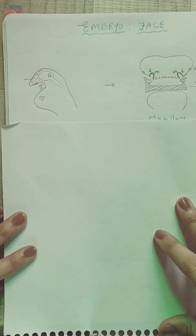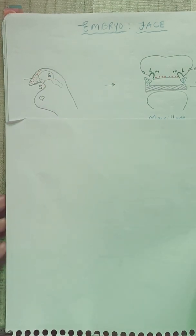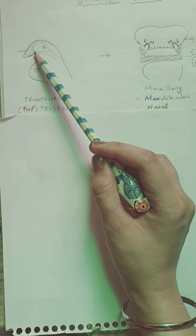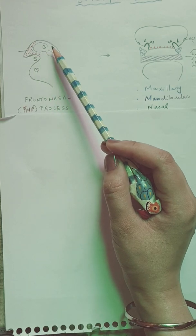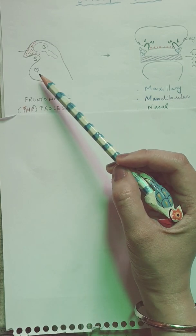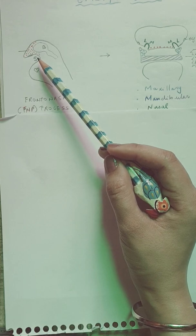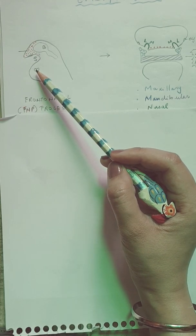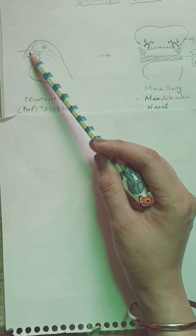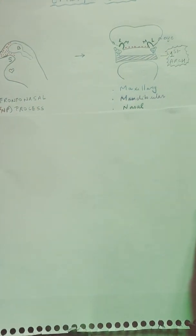This is the basic part of the embryo where the frontonasal process, which is one of those three processes important in development, develops from this part. This is actually the mesenchyme which is overlying the forebrain, and this is a part of the pericardium. The stomatodium, which forms the primitive mouth, lies between these two structures. The frontonasal process is the one that is a single process which will develop in the midline from this region.